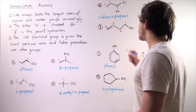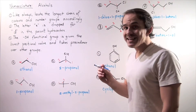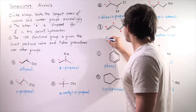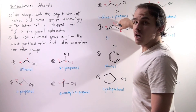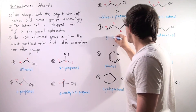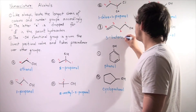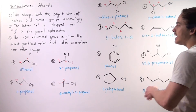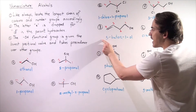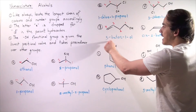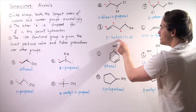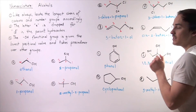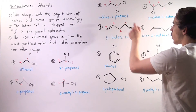We have a four-carbon chain, so we're going to have something like butene or butanol. We write: 3-buten-1-ol. The three represents where our double bond begins, butene indicates four carbons with a double bond, and the 1-ol indicates where our hydroxy group is located — on the first carbon.